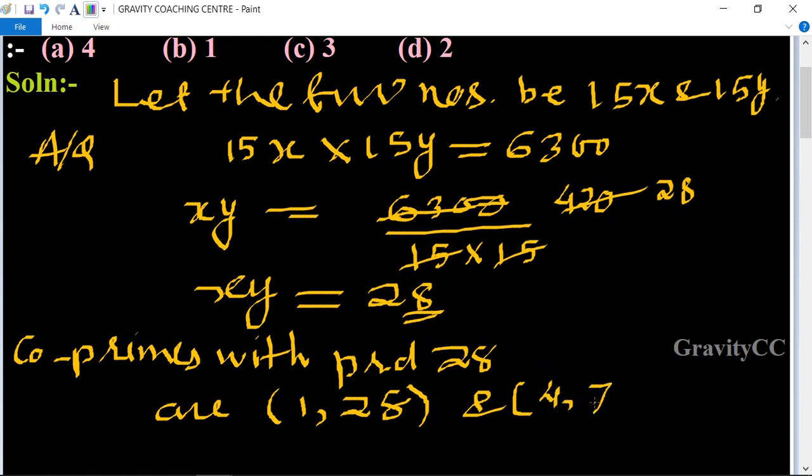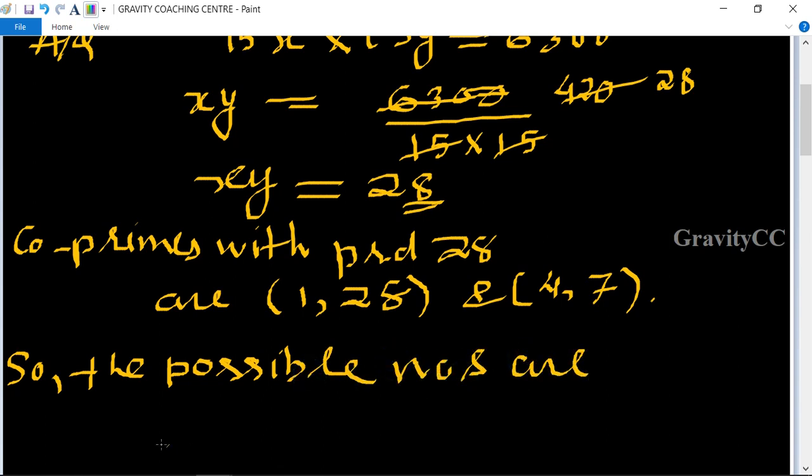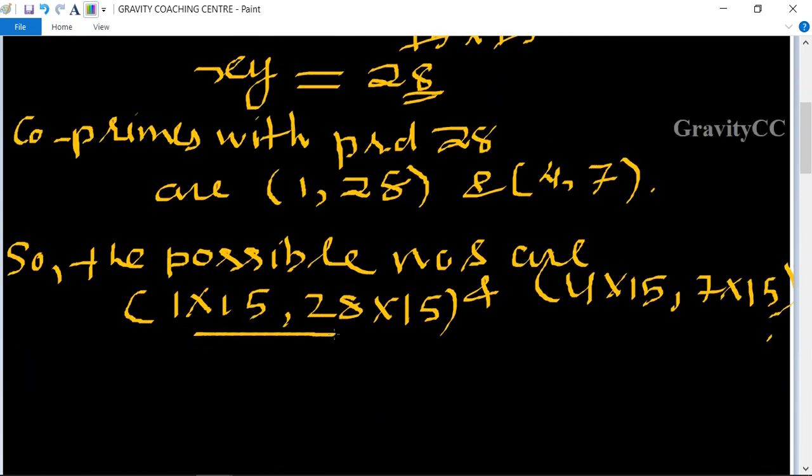So the possible numbers are 1 times 15 and 28 times 15, which gives us (15, 420), and 4 times 15 and 7 times 15, which gives us (60, 105). So two pairs are possible.